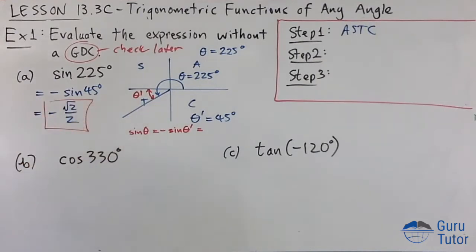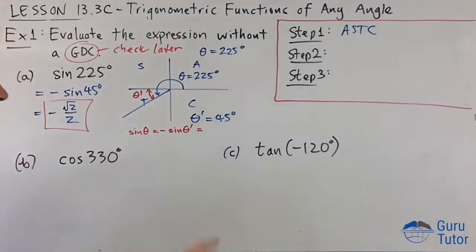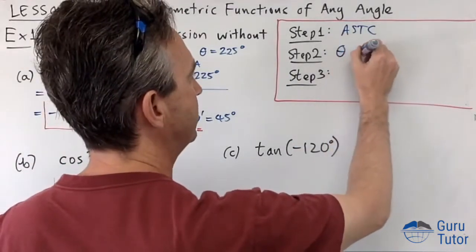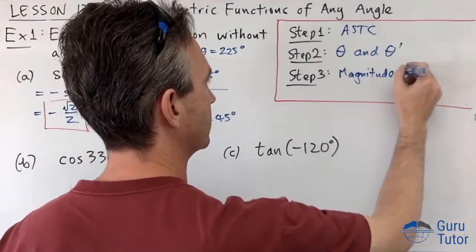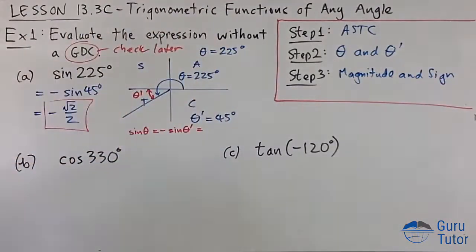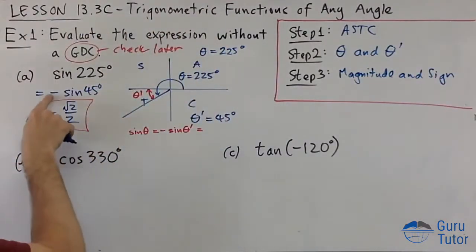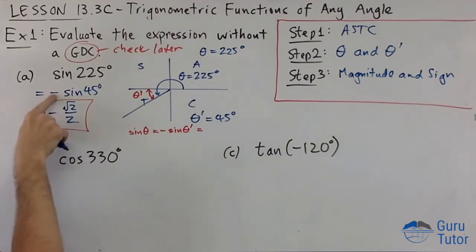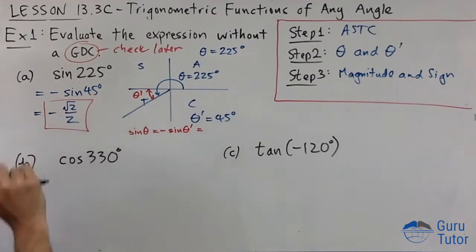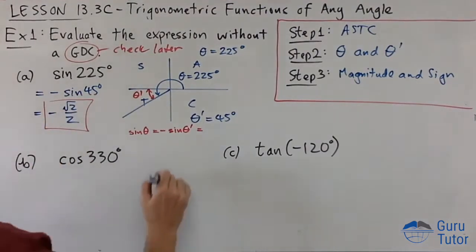There are three steps to get there. Step one: draw your ASTC diagram. Step two: identify θ and θ-dash, your reference angle. Step three: figure out is it positive or negative — put a plus or minus — then evaluate sin, cos, or tan of that reference angle. Let's try another one: cos(330°).